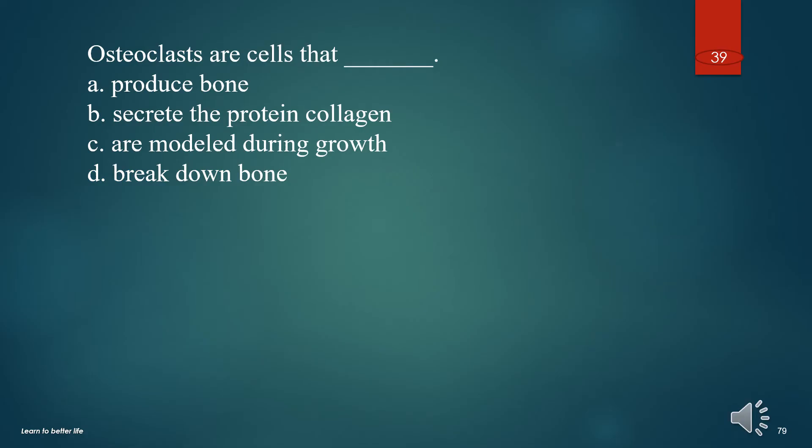Osteoclasts are cells that: A. Produce bone. B. Secrete the protein collagen. C. Are modeled during growth. D. Break down bone.